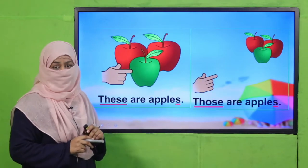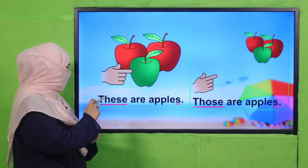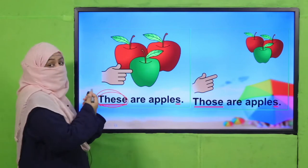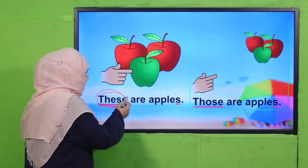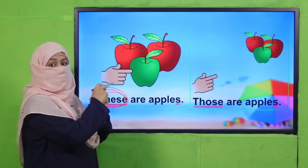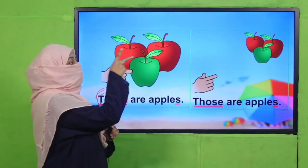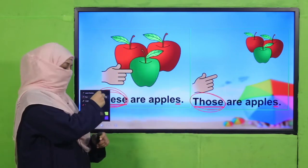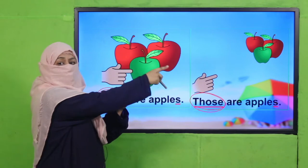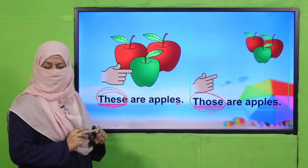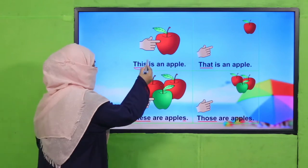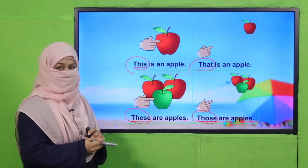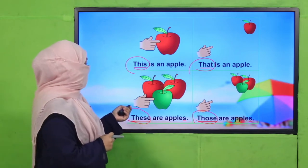If apples are more than one, how do we point to them? We say 'These are apples' — because the apples are closer to me. And 'Those are apples' — because the apples are farther from me. So 'these' and 'those' are also pointing words. So what we have learned so far: this, that, these, and those are pointing words.